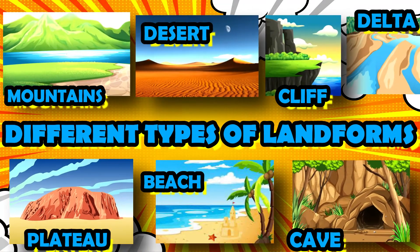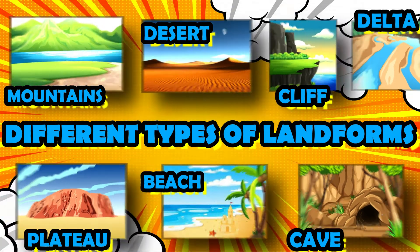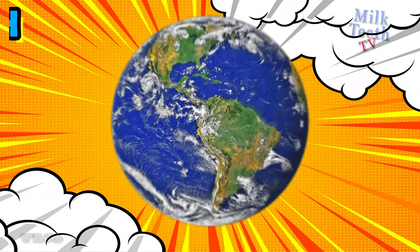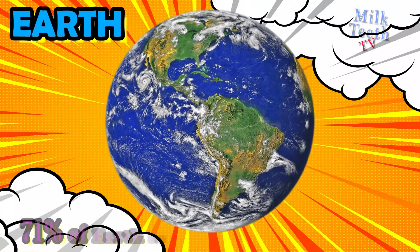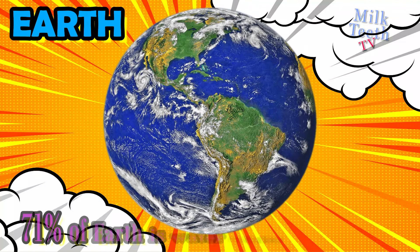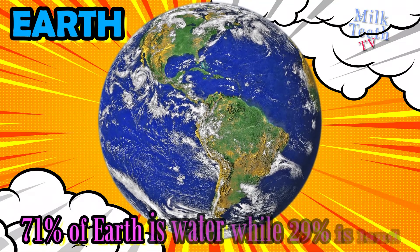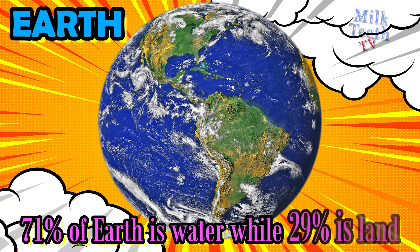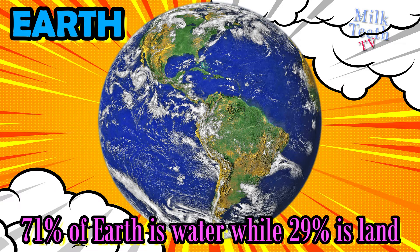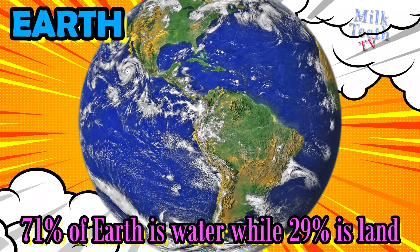Different types of landforms. This is the planet Earth. It is the only planet in the solar system where life exists. 71 percent of Earth is covered with water and only 29 percent of Earth is covered with land.